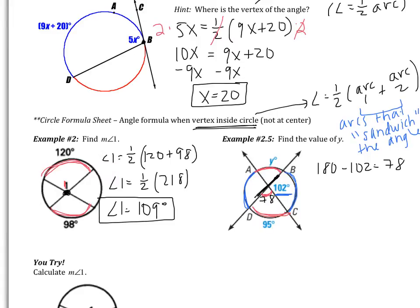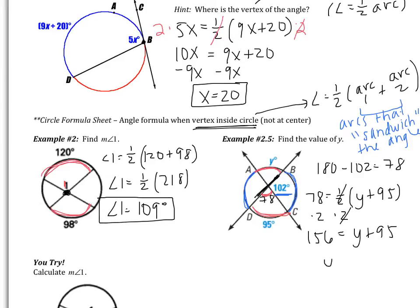Now I'm ready to use the formula. The angle 78 equals one half of the two arcs that sandwich it: Y plus 95. Multiplying both sides by 2 gives 156 equals Y plus 95. Subtracting 95 from both sides, I get Y equals 61 degrees. Remember: the angle must be sandwiched between the two arcs — 102 is sandwiched by the blue arcs, and 78 is sandwiched by the red arcs.